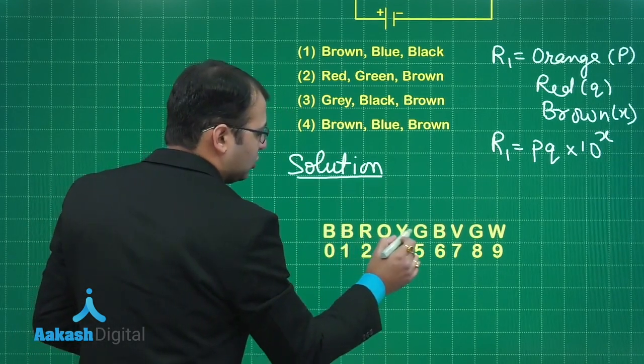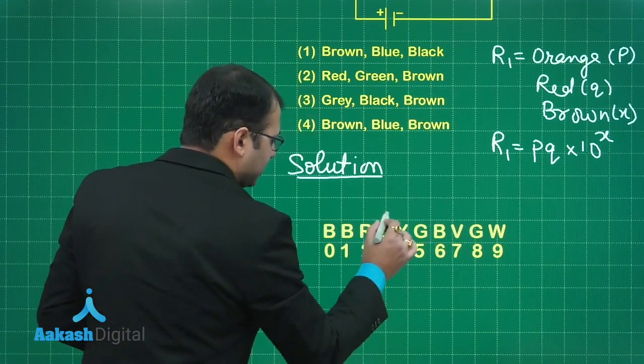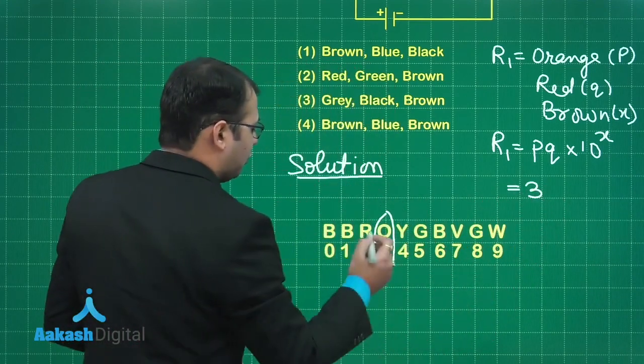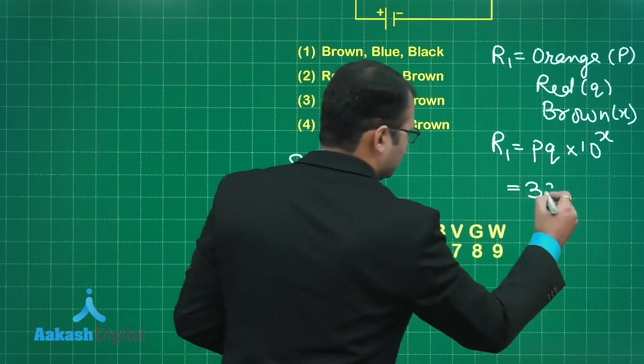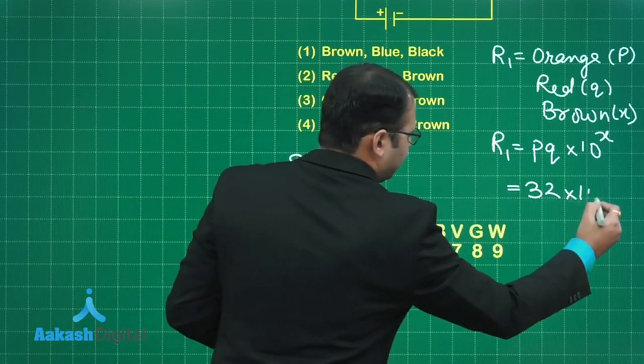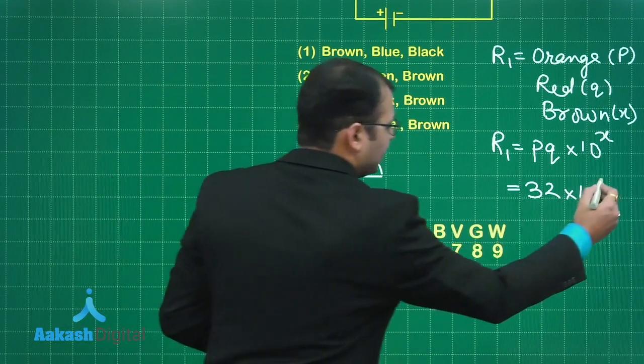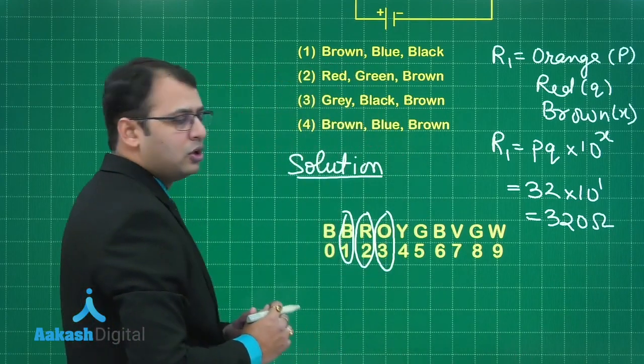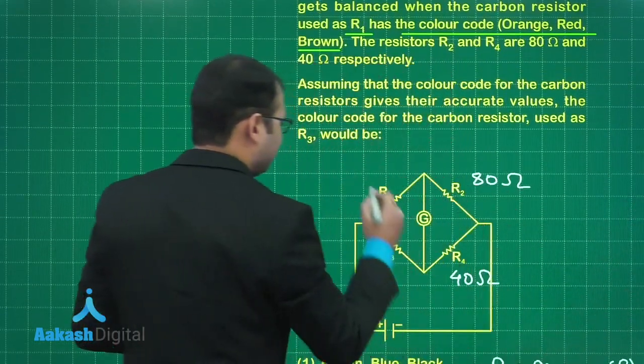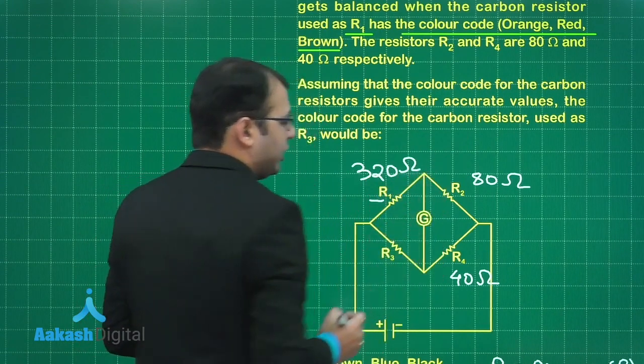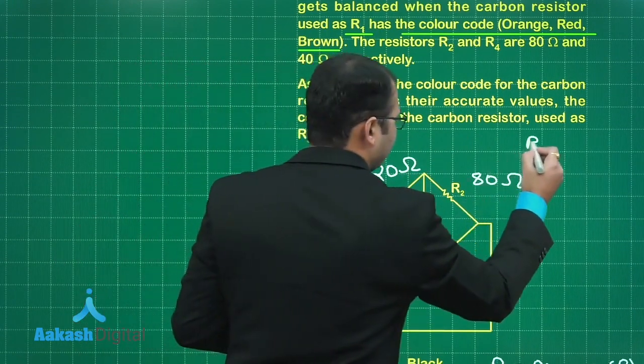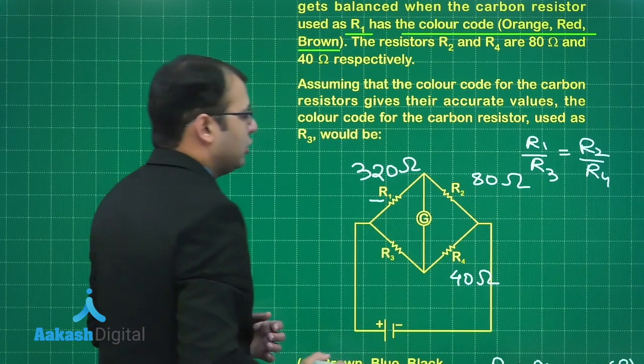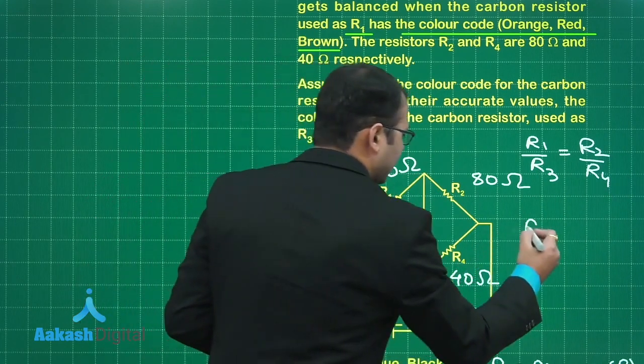For orange you can see this mnemonic: BB Roy Great Britain Very Good Wife. The mapping of colors is black, brown, red, orange, yellow, green, blue, violet, gray, white. For orange color, for P I will write 3, for red 2, and for brown color value is 1. That means it is 32 times 10 to power 1, which is 320 ohms. With this value at balance condition, R1 by R3 should be equal to R2 by R4. Except R3 we know all three values, so R3 equals 160 ohm.